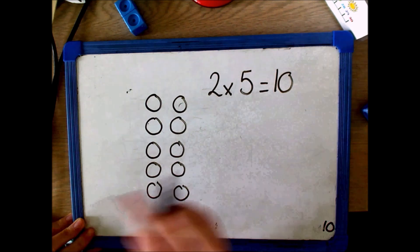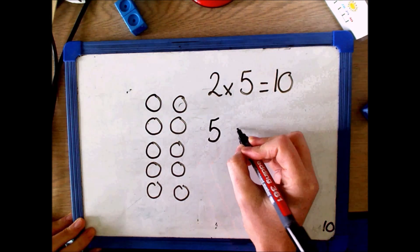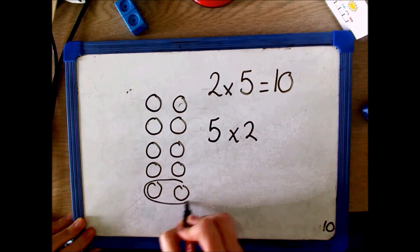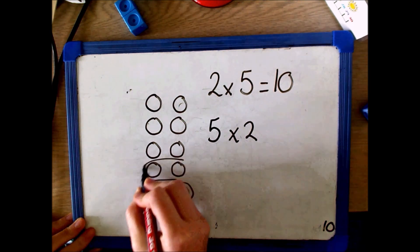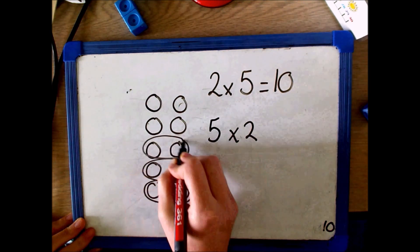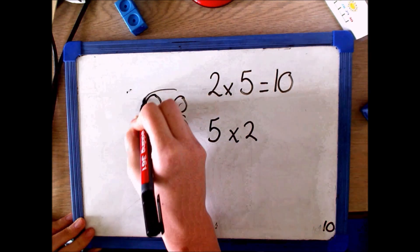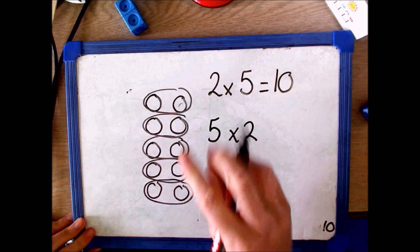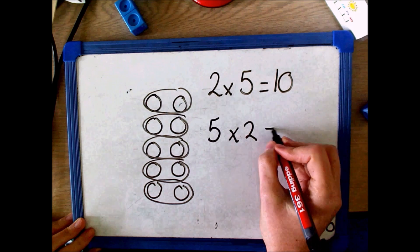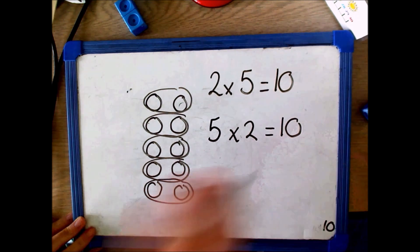Arrays are also great at showing the commutative relationship between multiplication. So here I can also see this array as 5 times 2, counting in 2s: 2, 4, 6, 8, 10 — 5 groups of 2.